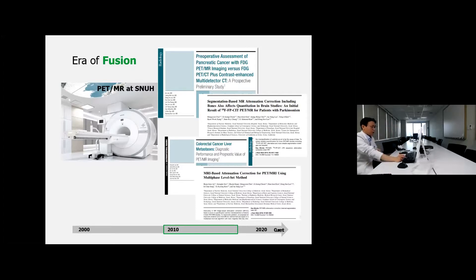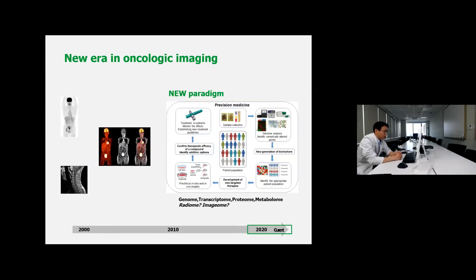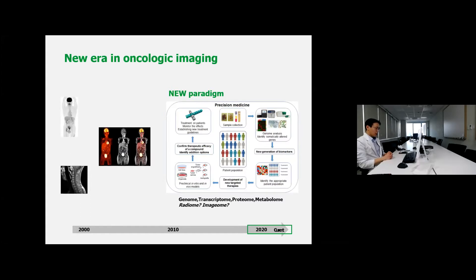But many things changed after the end of the 2010s — a new paradigm emerged: precision medicine. Many new technologies for diagnosis or therapy changed by new techniques such as NGS, next generation sequencing. Genome, transcriptome, proteome, or metabolome have changed many treatment strategies for cancer therapy. Recently, many oncologists and surgeons use precision medicine principles for treatment and diagnosis.